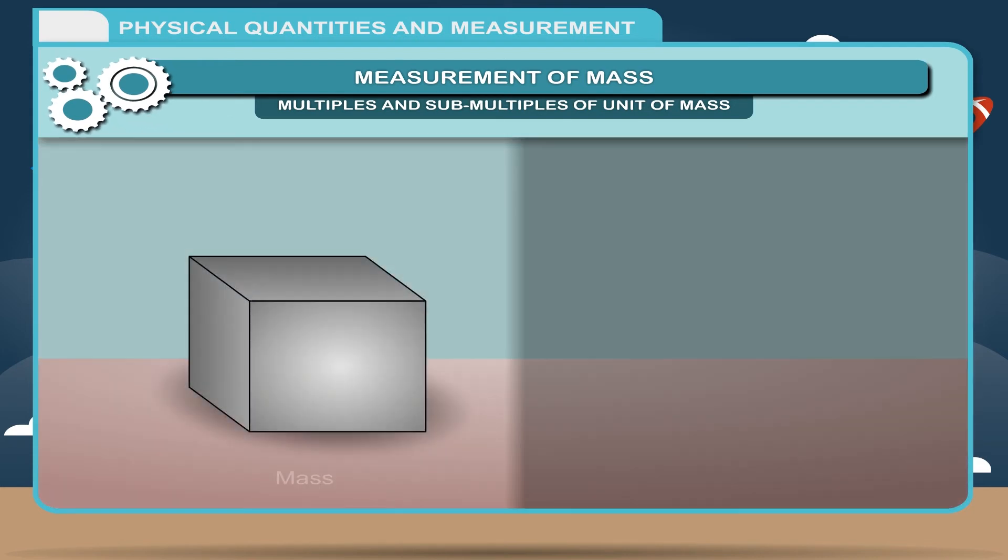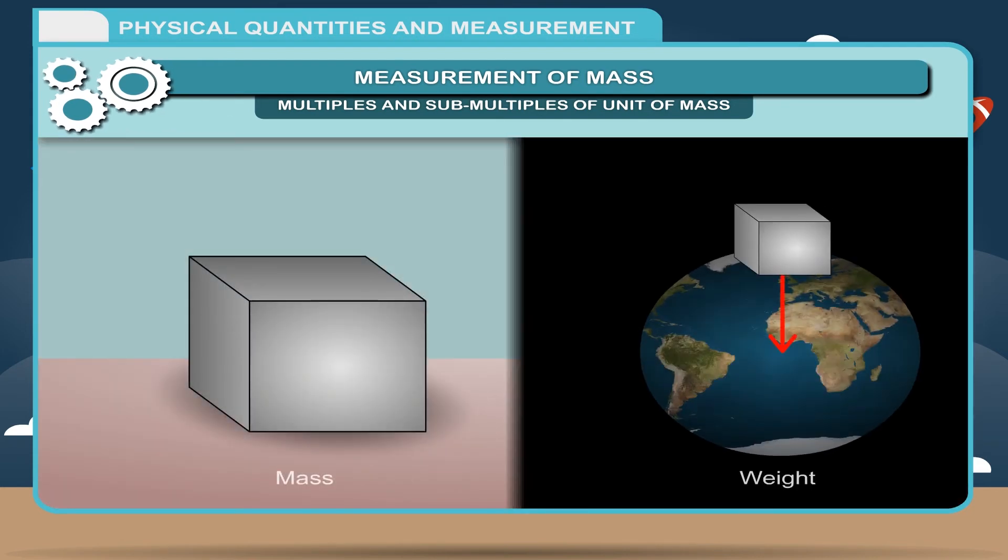Note: We must not confuse ourselves considering both mass and weight as the same physical quantities. Mass is the amount of matter contained while weight is the force with which the earth attracts a body towards its center.